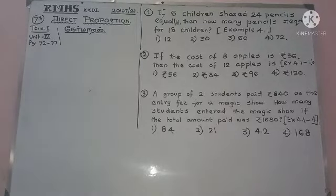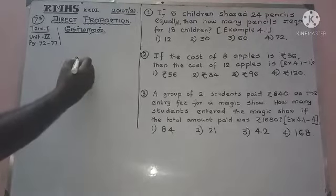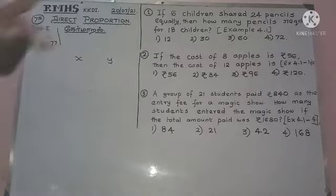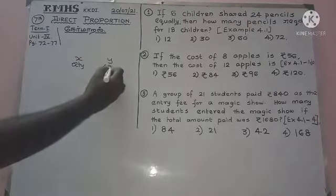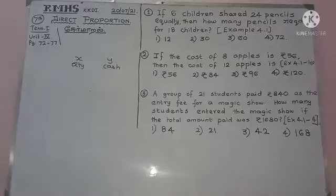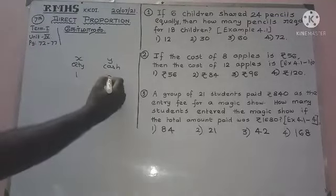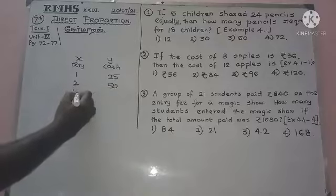What is the direct proportion? I'm going to show Paul's shop. There are two pairs, X and Y. X is a quantity — the quantity is $20. The cash is Y. If you come to a packet of Paul, you can pay $20.